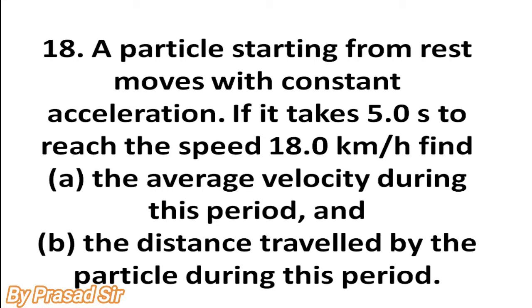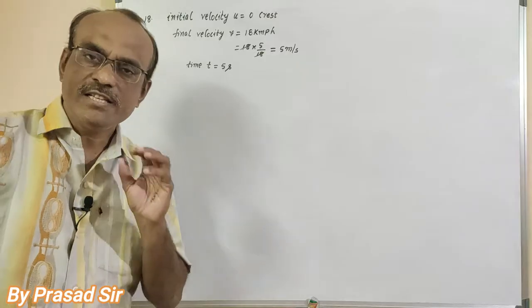A particle starting from rest moves with constant acceleration. If it takes 5 seconds to reach the speed 18 kilometers per hour, find (a) the average velocity during this period and (b) the distance traveled by the particle during this period.